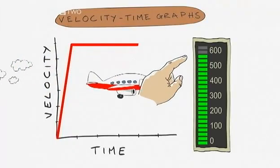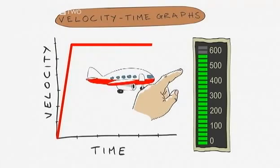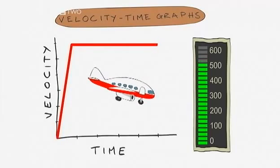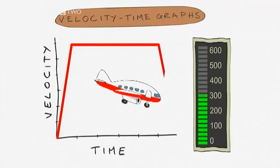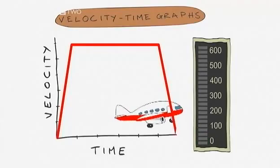That's a big difference between velocity time graphs and distance time graphs. Horizontal lines mean different things on each one. And coming to land, we decelerate and come to a nice gentle halt. Our velocity is zero again.